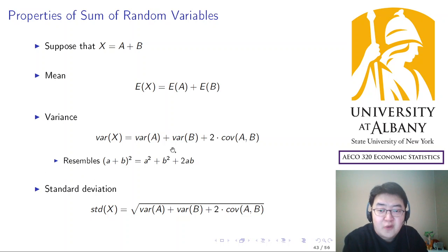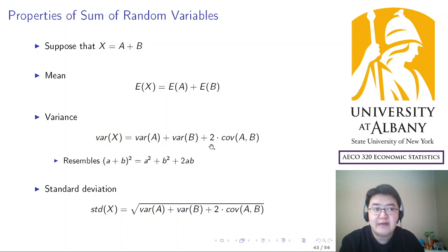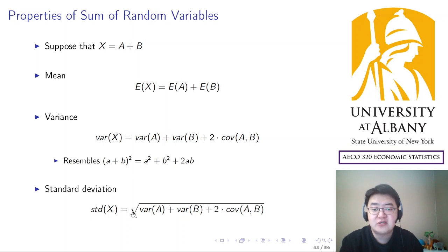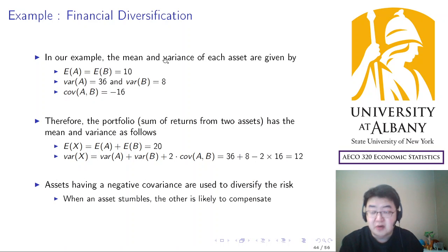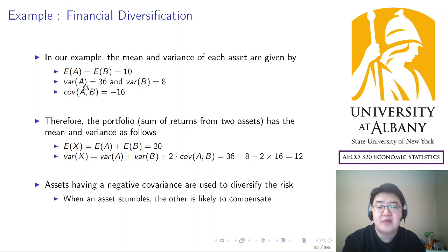We learned the formula for how the variance of a sum is calculated. You have to take into account two times the cross product, like the expansion of a quadratic term, and then standard deviation follows directly from this formula. Applying this to our example: there are two assets A and B, both with the same expected return. The variance of A is 36 and variance of B is 8, so B is safer and A is more risky. The covariance between them is negative 16, so they are moving in exactly the opposite direction.